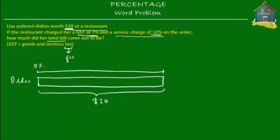The $30 is 100% of the cost of the order, running from 0% to 100% on the percent scale. On top of that, Lisa had to pay a GST — the fee the government charged — of 7%. The 7% is on the cost of the order, which means it's 7% of $30.